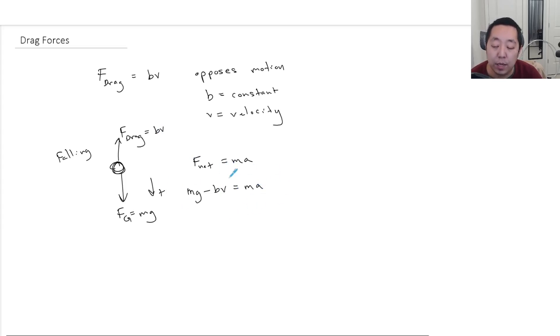Now, this ends up being what we call a differential equation. Because acceleration I can write is M dV/dT. So if you look at this setup, what this is, is a differential equation involving V, because everything else is a constant. M is a constant, assuming the object isn't changing its mass over time.